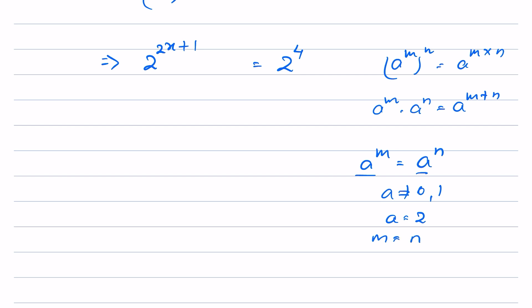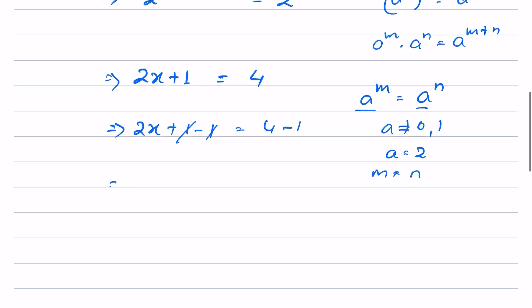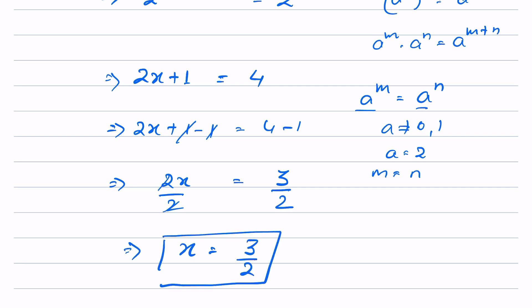So 2x plus 1 equals 4. Subtracting 1 from both sides: 2x equals 3. Dividing both sides by 2, therefore x is equal to 3 upon 2.